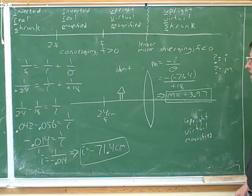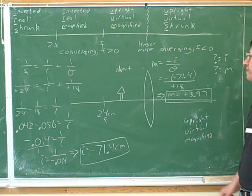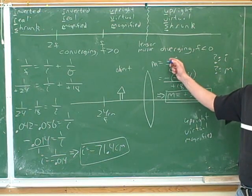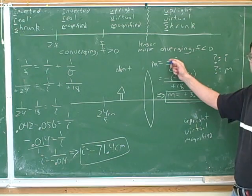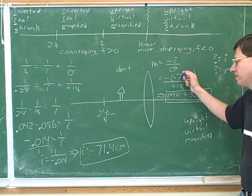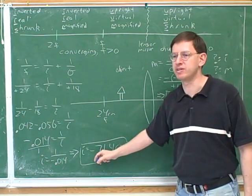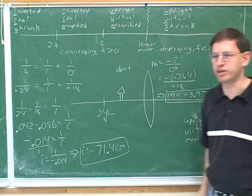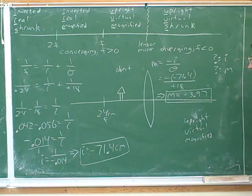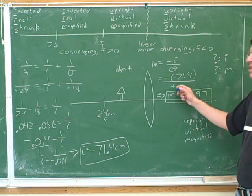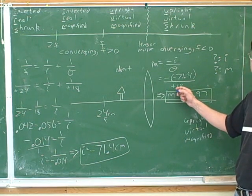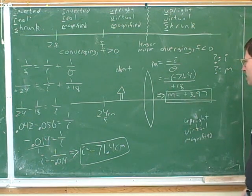What you have written down is very good. It's important to keep track of the negative signs here. First, there was a negative from the formula, and then there was another negative from the image distance. So it's important to really take your time with that. Might as well put in a positive for the object distance too, because we're plugging in a positive object distance here.